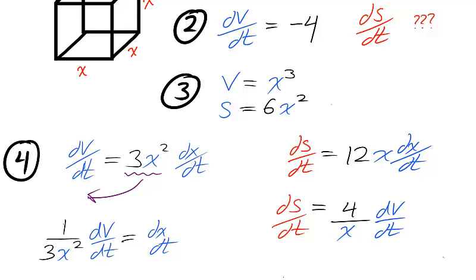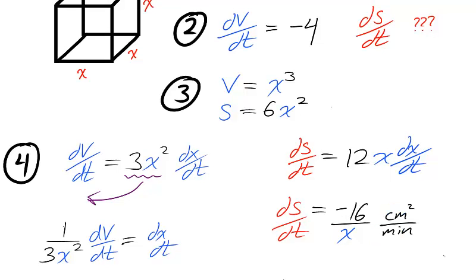Now, we're told that dV/dt is constantly negative 4, so the change in the surface area depends upon the current size of the cube. This is the best answer we can provide with the information given. Once we're given a specific side length, X, we can figure out dS/dt.